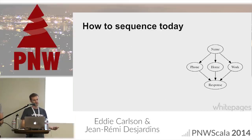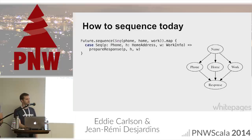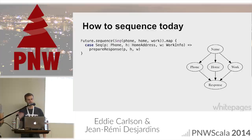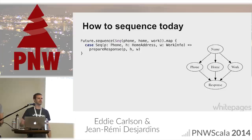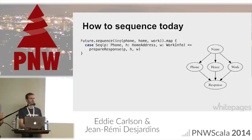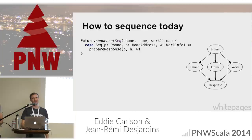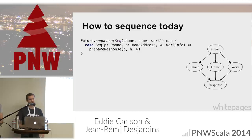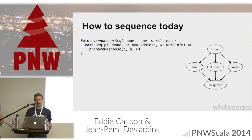There are a variety of ways to sequence today. In an earlier talk we saw Future.sequence. Future.sequence is great — you can give it a sequence of futures. Does anyone know what this Future.sequence call is going to return, minus the map? We give it a sequence of Future of Any, and it's going to return to us a Future of Sequence of Any.